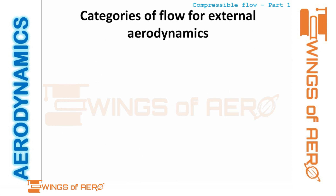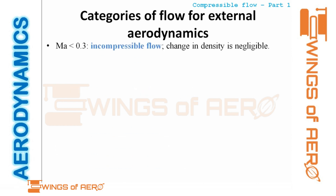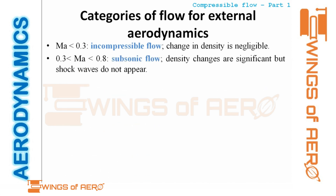For external aerodynamics, the categories of flow are as follows. First, incompressible flow where the Mach number is less than 0.3 — the change in density is negligible and density is considered constant. Next is the subsonic region, where the Mach number ranges from 0.3 to 0.8.